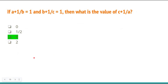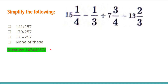If A + 1/B = 1 and B + 1/C = 1, then what is the value of C + 1/A? Do simple equation solving and you will get C + 1/A = 1 as well. Option C, 1, is the correct answer. Next, simplify: 15¼ − (1/3) ÷ 7¾ + 13⅔. The answer I got is 10,741/372, which is not in the options, so the answer is none of these.